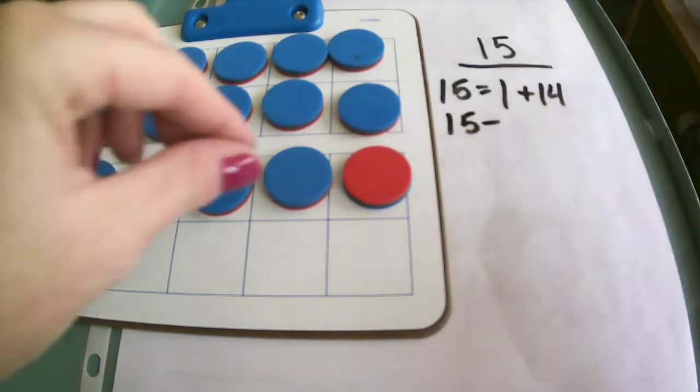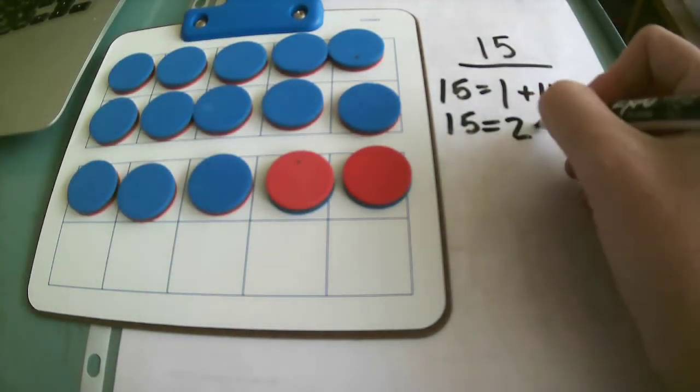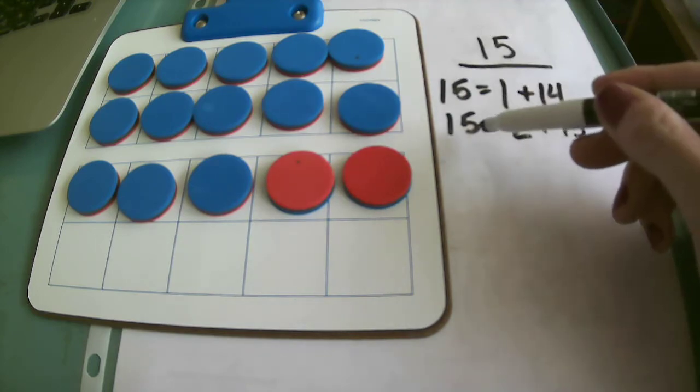This time I'm going to flip one more and I have 2 reds and 13 blues. So I know that 2 and 13 are going to give me 15.